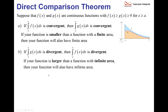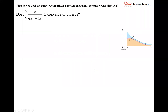The direct comparison theorem is contingent upon the inequality, so this video looks at what happens when the inequality goes the wrong way. We have a function x over the square root of x to the fourth plus 3x, integrated from two to infinity. The 3x term is insignificant — as x gets large, 3x against x to the fourth is not significant — so we drop off the 3x, creating a new simplified fraction.